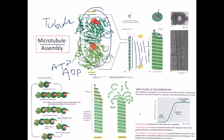Now let's talk about the arrangement of alpha and beta tubulin dimers. The beta tubulin is actually bound to GTP, not ATP as mentioned earlier - this is an important correction. If GTP binds to beta tubulin, it is active in nature; if GDP binds to it, it is inactive.